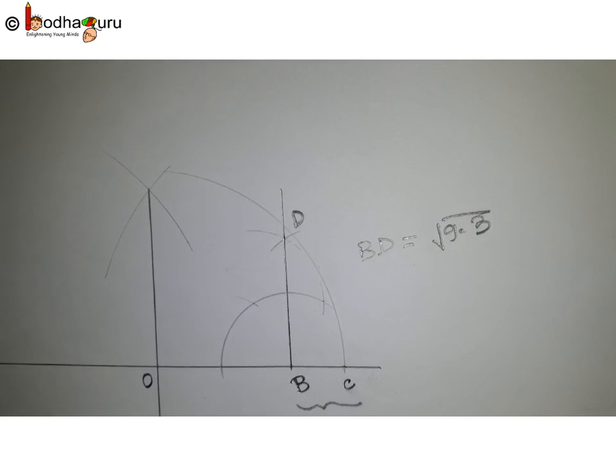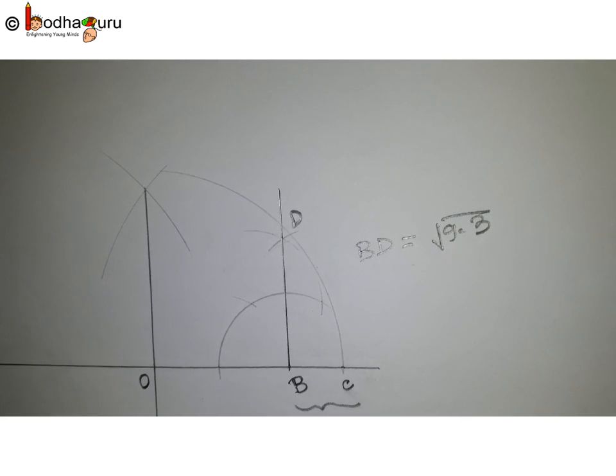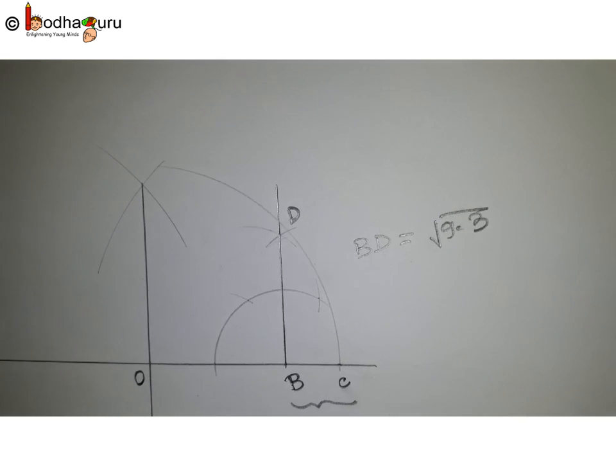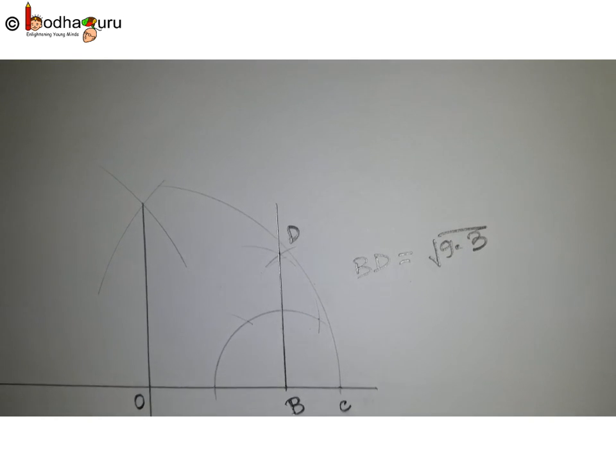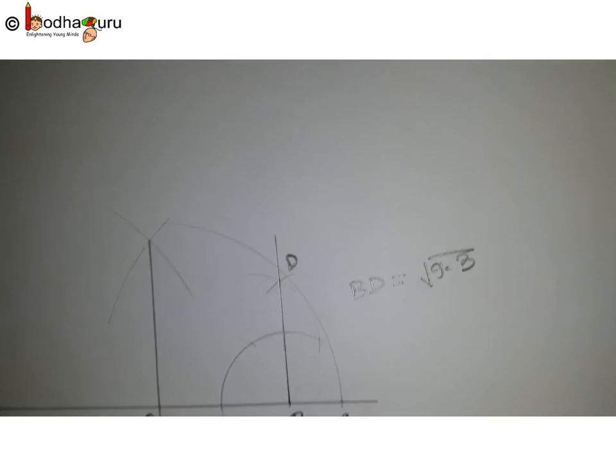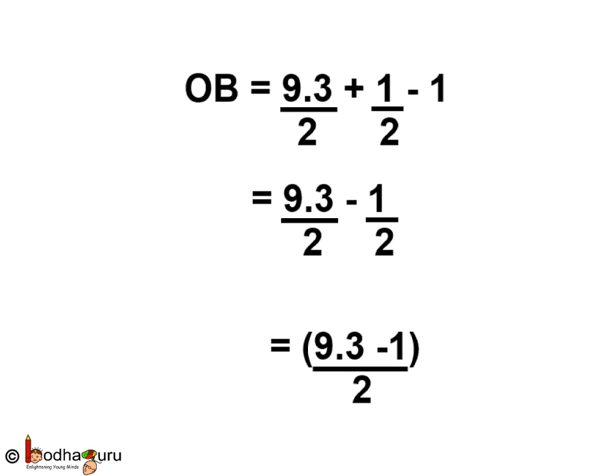Look, OA or OD or OC is the radius of the circle, which is we know (9.3 plus 1) by 2. So OB will be equal to (9.3 plus 1) by 2 minus 1, which is equal to 9.3 by 2 plus 1 by 2 minus 1, which is equal to 9.3 by 2 minus 1 by 2, or (9.3 minus 1) whole bracket by 2.